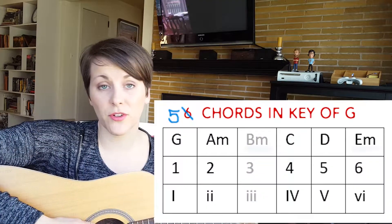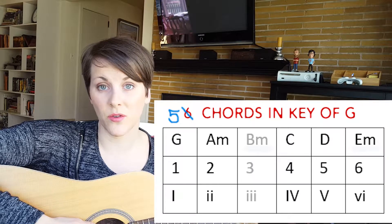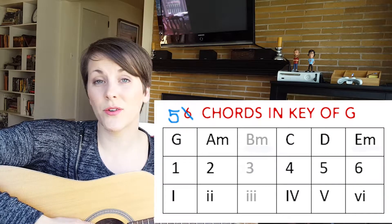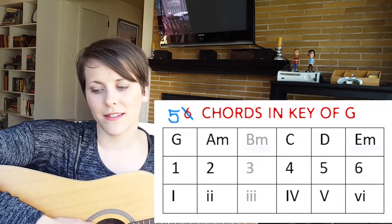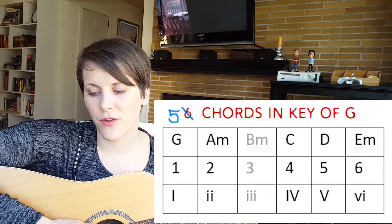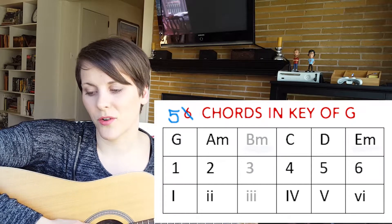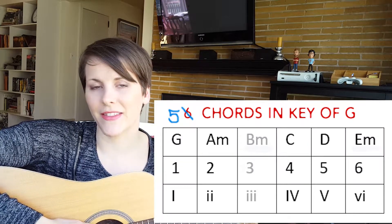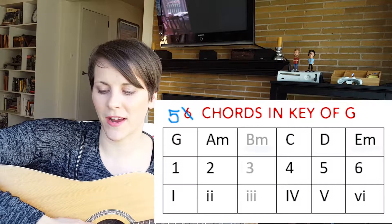If you look at the chart that I made for you, the first chord is G, the second chord is A minor, the third chord is B minor, the fourth chord is C, the fifth chord is D, and the sixth chord is E minor.